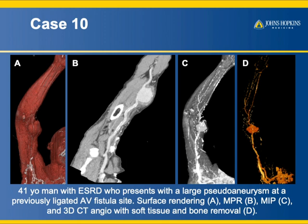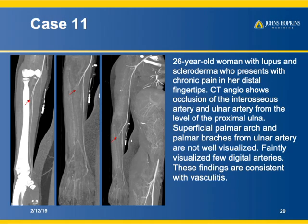A patient with end-stage renal disease has a large pseudoaneurysm. Many of the patients we show are not trauma patients — they are complicated cases who've had catheterization procedures, AV fistulas, or grafts placed. Something has compromised the vessel, and these are the resulting complications. A 26-year-old with lupus and scleroderma presenting with chronic digital pain demonstrates interosseous artery and ulnar artery occlusion, poorly visualized superficial palmar branches, and faint digital branches — this is vasculitis.